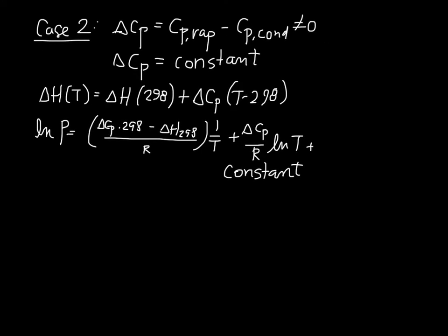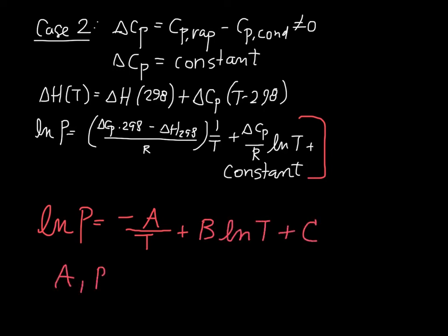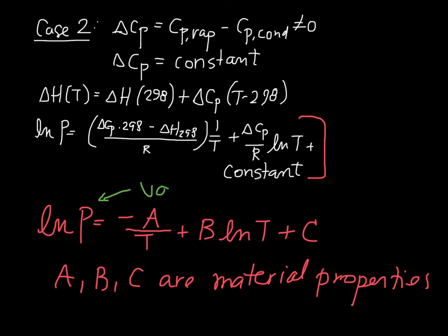So we get this, and that's fine, but it's not in a particularly useful format. And instead, this expression here is commonly expressed in the following way. So it says ln of P is negative A divided by T plus B ln of T plus C. And here, A, B, and C are material properties, basically. So this expression right here is the equation for the vapor pressure as a function of temperature for a material.